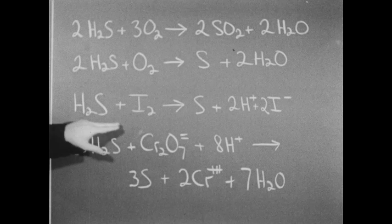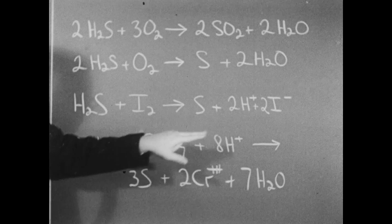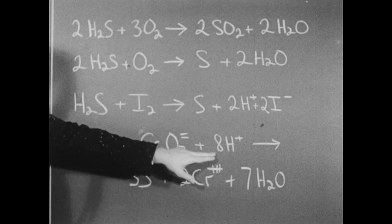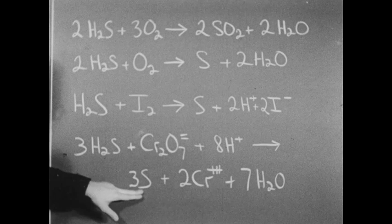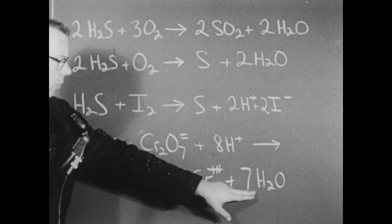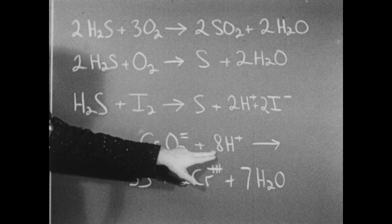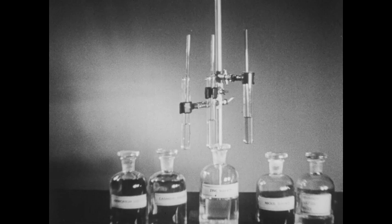We saw that hydrogen sulfide water reacts with iodine to produce sulfur and solutions containing hydrogen iodide. Then we saw that acidified solutions of a dichromate react with hydrogen sulfide water to produce sulfur, the green chromic ion, and water. You should observe that there are 14 hydrogens present in the seven molecules of water — eight came from the sulfuric acid which we added, and the other six from the hydrogen sulfide.